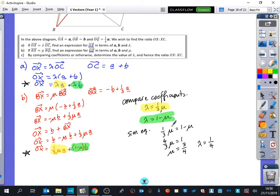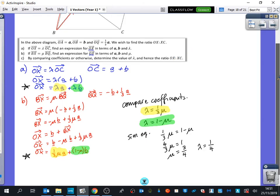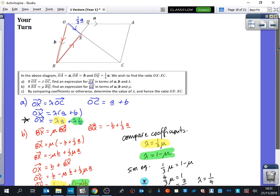You also have simultaneous equation solvers on calculators and things, but this is a dead easy one that you can do. We haven't even finished the question. We've determined the value of lambda, but it wants us to know the ratio OX to XC. So let's actually just go up here a second. We've said that mu is three quarters and lambda is one quarter.